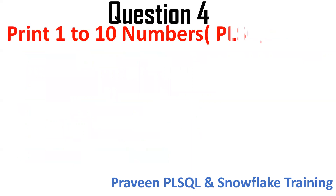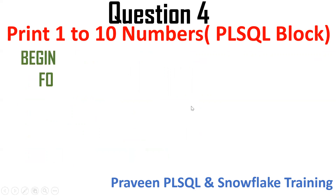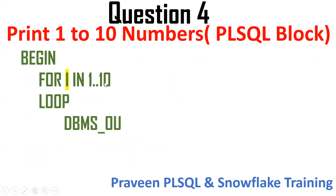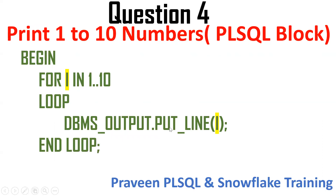The next question is to print numbers 1 to 10 using PL/SQL. In SQL you can use CONNECT BY LEVEL, but in PL/SQL we use a loop. Using an anonymous block: BEGIN, FOR i IN 1..10 LOOP, DBMS_OUTPUT.PUT_LINE(i), END LOOP, END. Remember to use SET SERVEROUTPUT ON to see the result on the console. To print 1 to 100, replace 10 with 100.